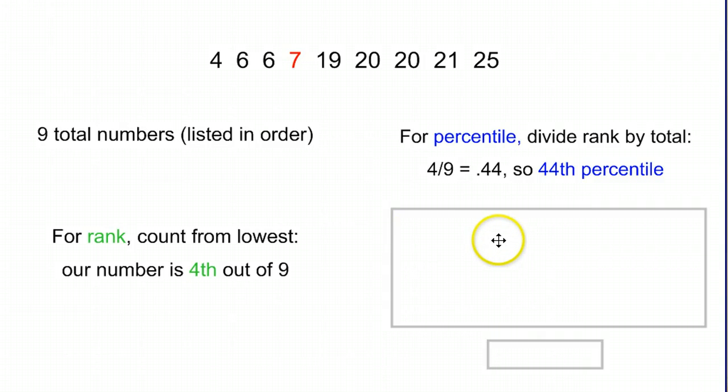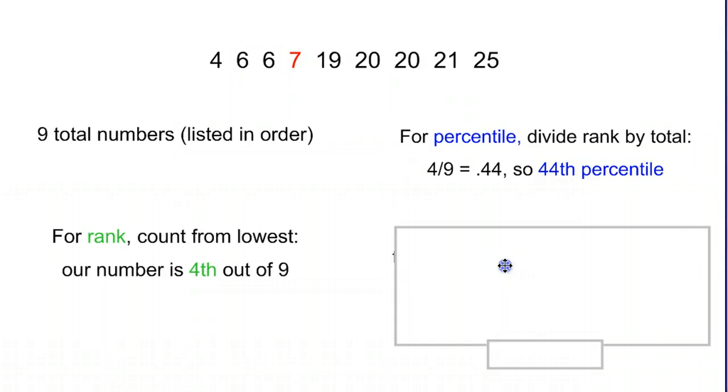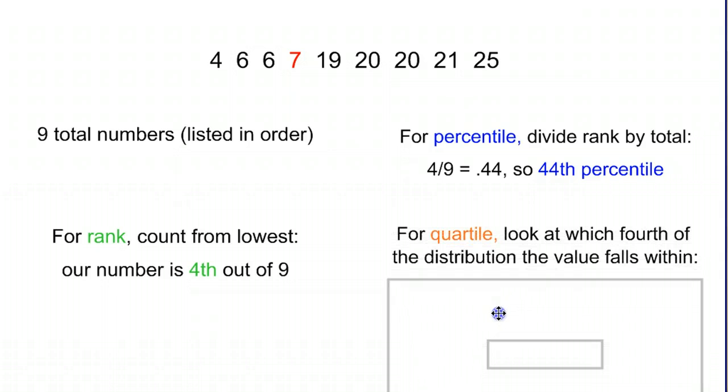Finally, we have the quartile. Now for quartile, we ask what fourth of the distribution that seven falls within. You can do the five number summary and figure out where it falls from there. I found that that tends to be a little bit tricky and can run into some problems on certain distributions, especially smaller distributions. So what we're going to do instead is just use our percentile as a way to figure out what quartile we are in. So in this case, we're in the 44th percentile.